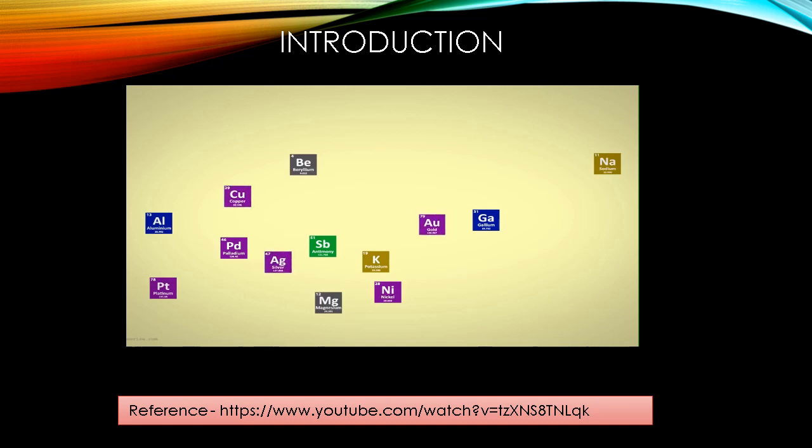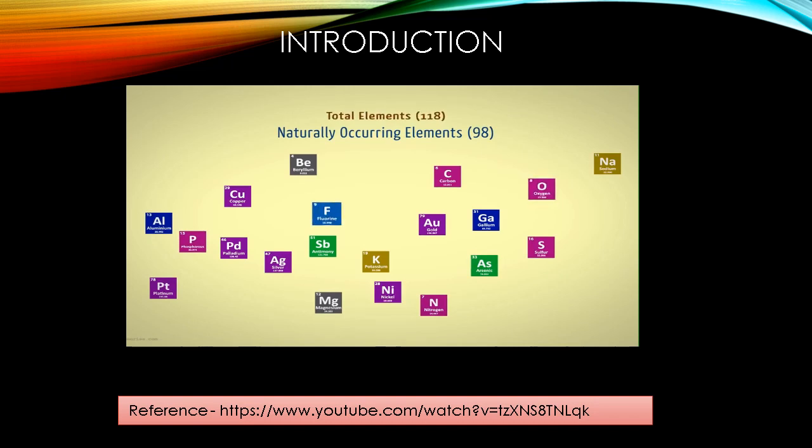Astonishingly, the number of elements that we find naturally occurring is 98, while the total number of elements known to mankind is 118. So how do we study each element individually for all its properties? Looking at the number of elements that exist, I don't think it would be convenient to pick every element individually and study all the properties, right?